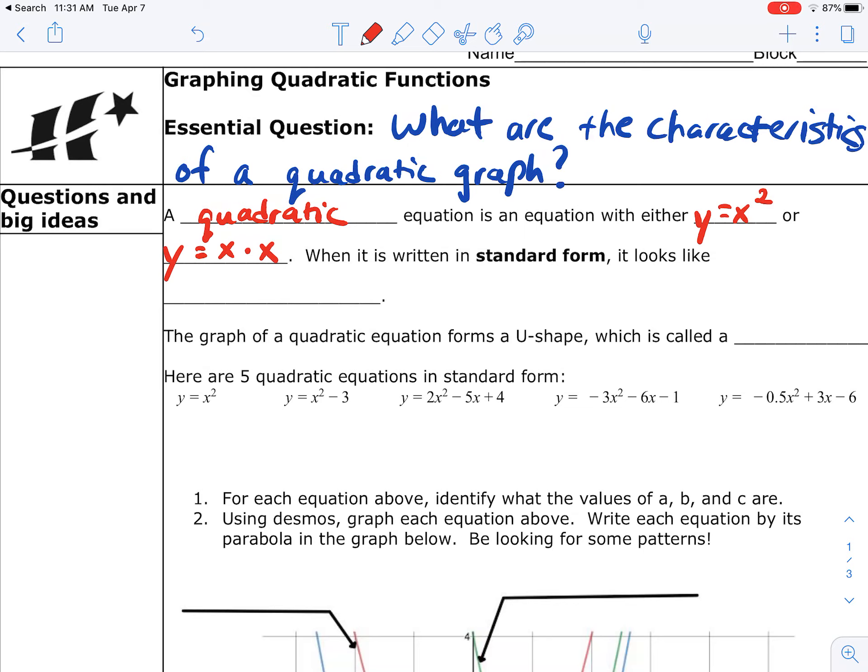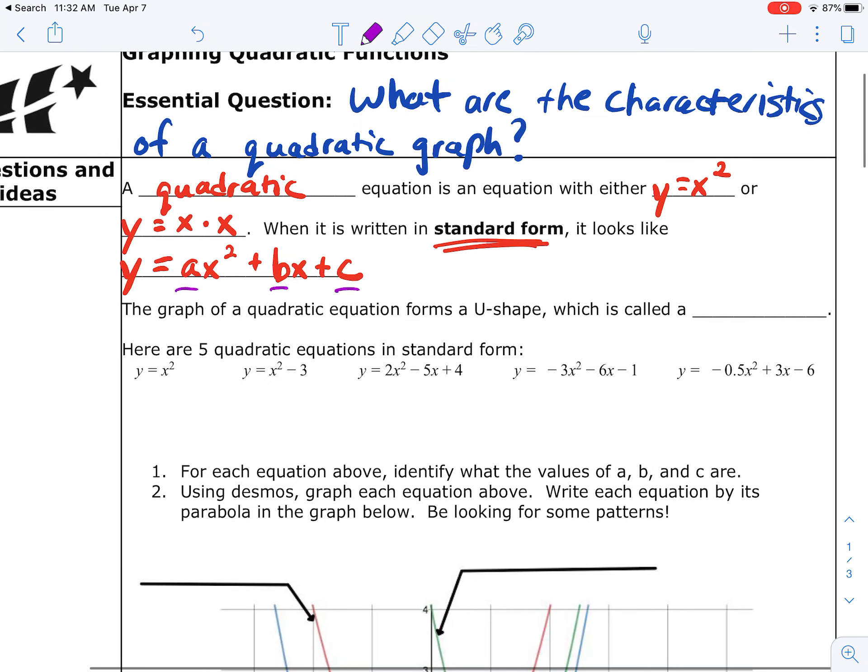When it's in something called standard form, that's what we're going to be looking at today. You're going to have this form: y equals ax squared plus bx plus c, where a, b, and c are going to be numerical values. If any of those values are zero, then you'll just be left with some of the other terms. But in a full standard form equation, you will have all three of those terms.